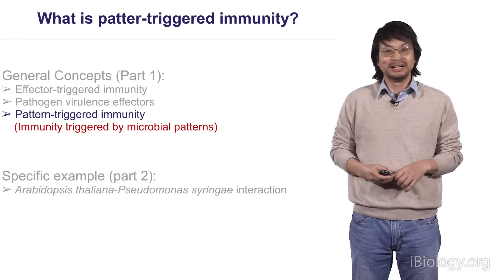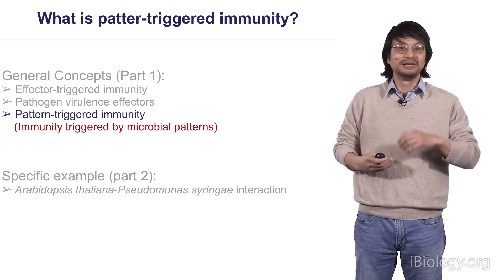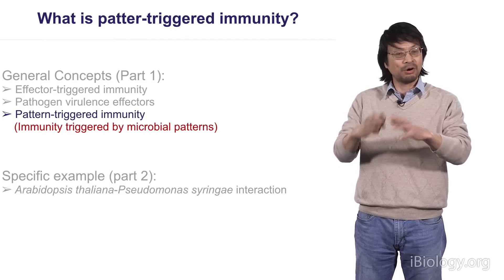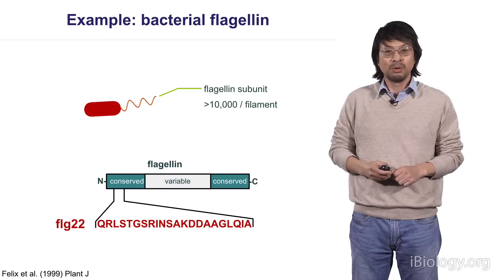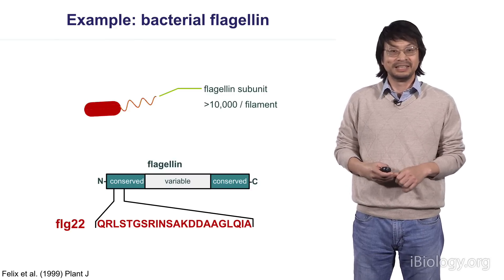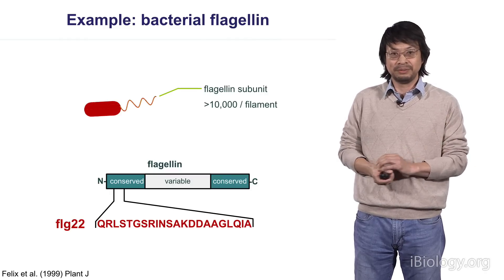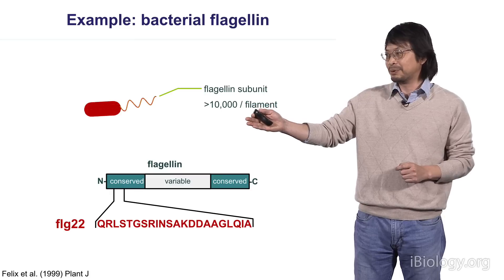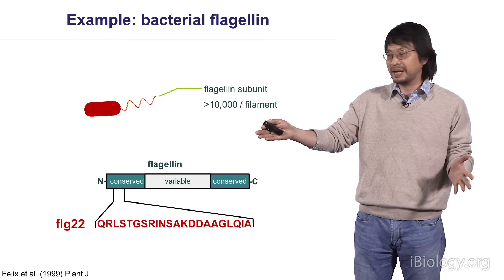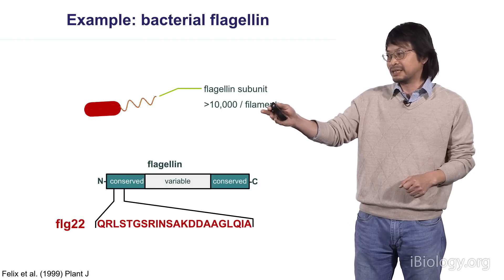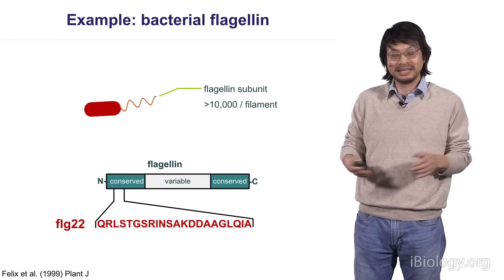What is pattern-triggered immunity? This branch of immunity is not triggered by effectors of the pathogen, but it's triggered by common patterns from microbes that can be pathogens or non-pathogens. They are involved in recognizing all kinds of microbes. They are probably more ancient than effector-triggered immunity and more related to the animal innate immunity system. One example of such a pattern from bacteria is bacterial flagellin - very common, because most bacteria need to swim and have to have these structures. The flagellin has a conserved domain at the N-terminus and C-terminus, with a variable region in the middle, and there's a peptide called FLG22 - 22 amino acid peptides - commonly used in the study of pattern-triggered immunity.